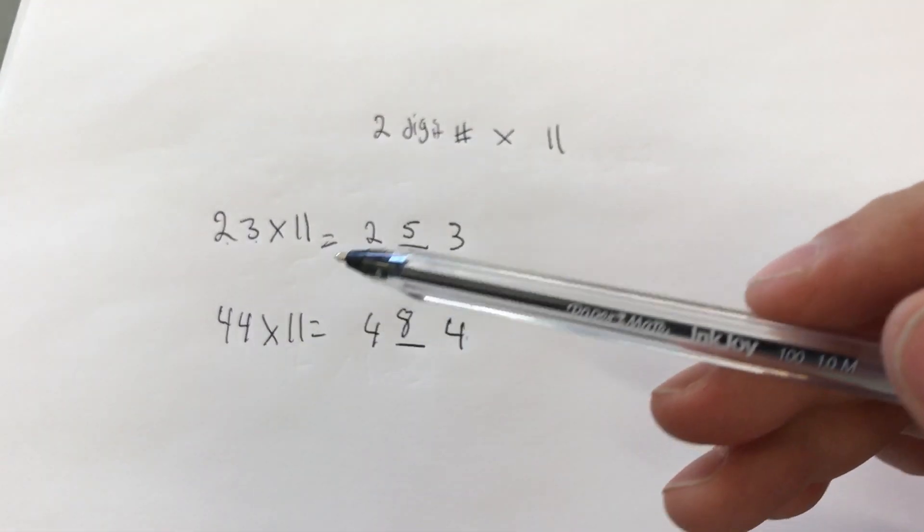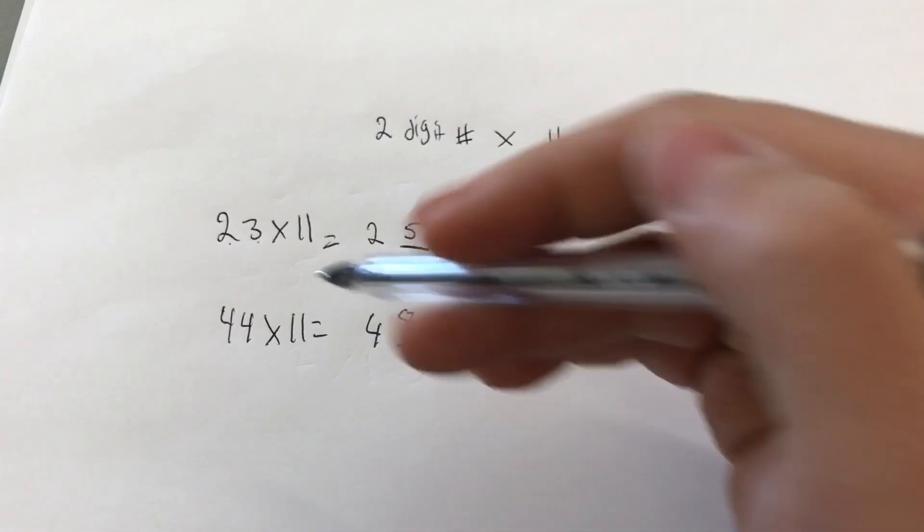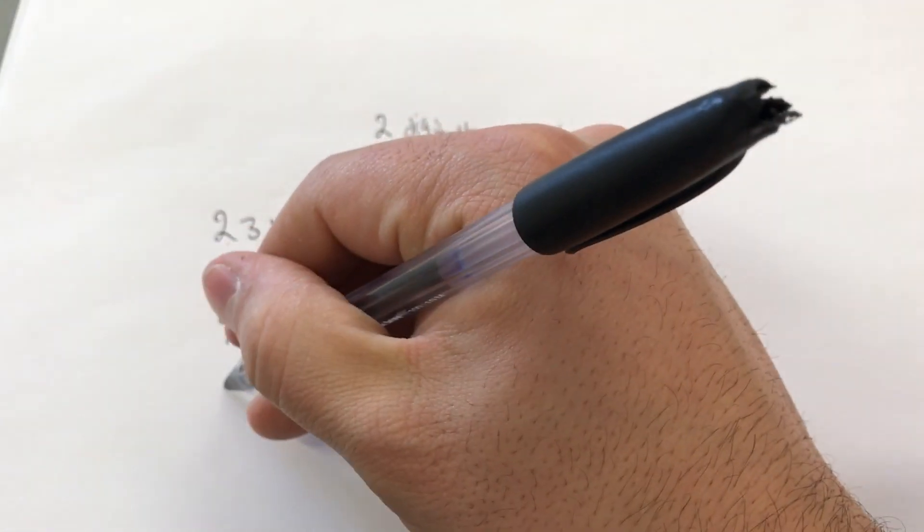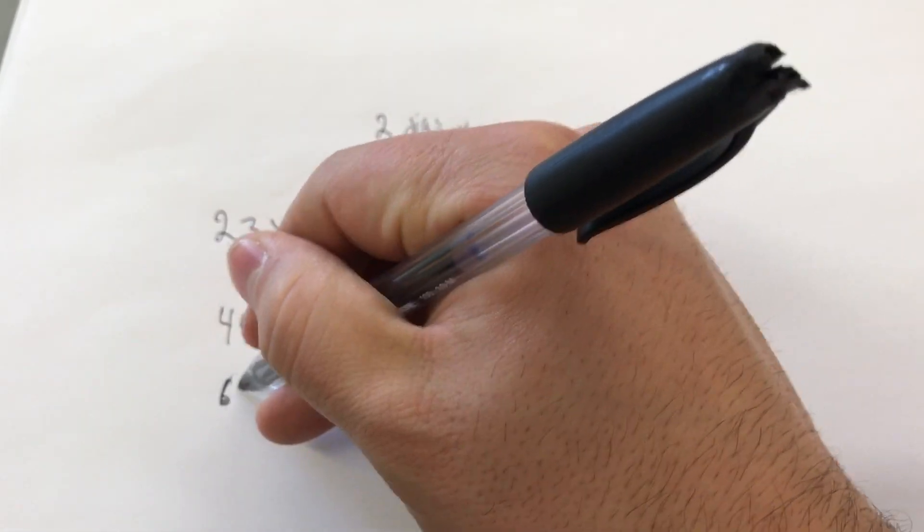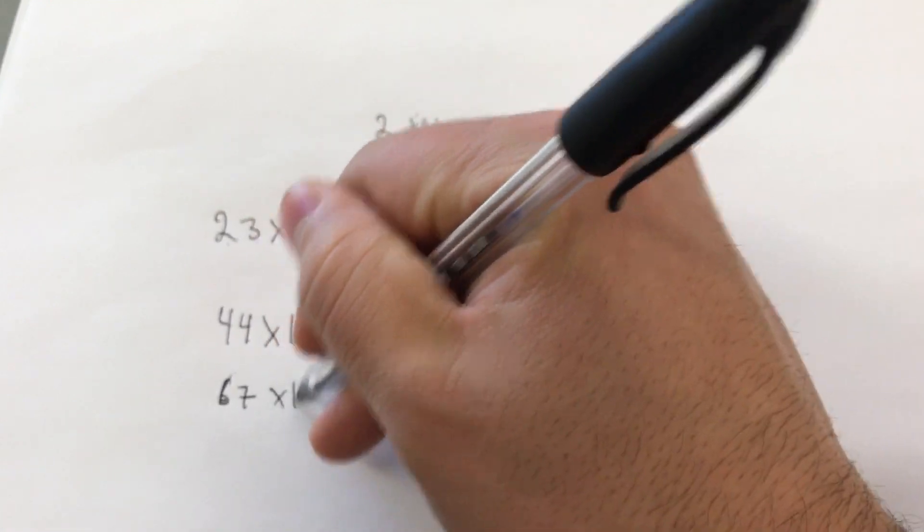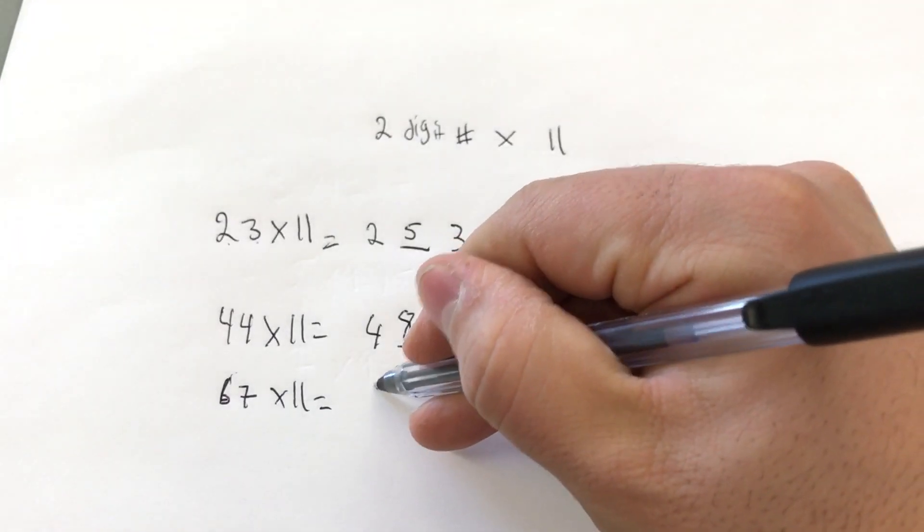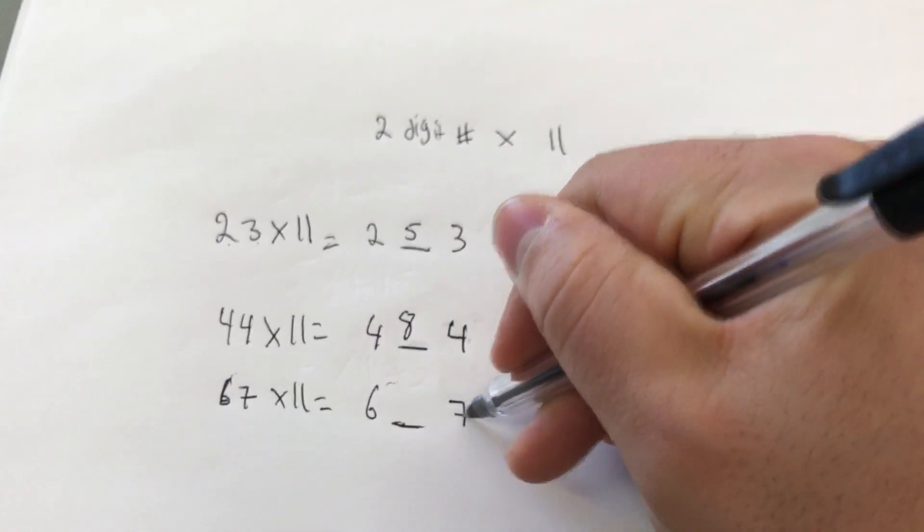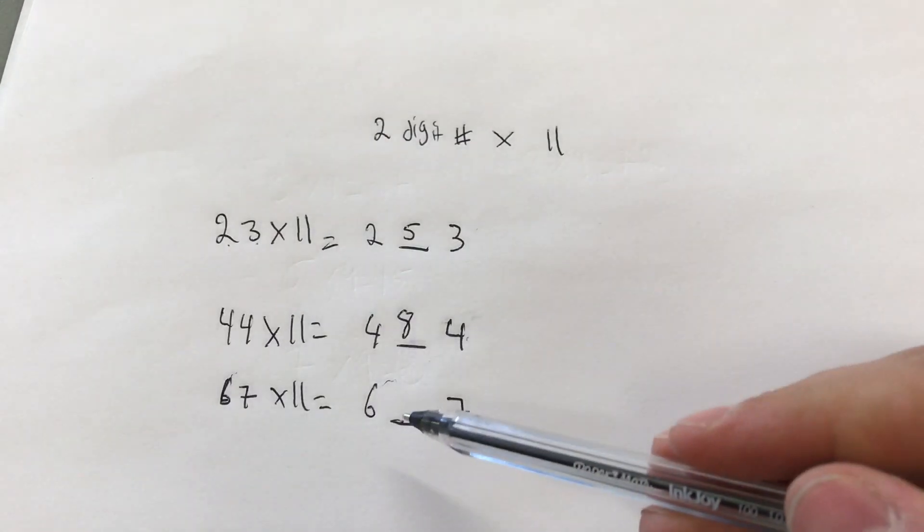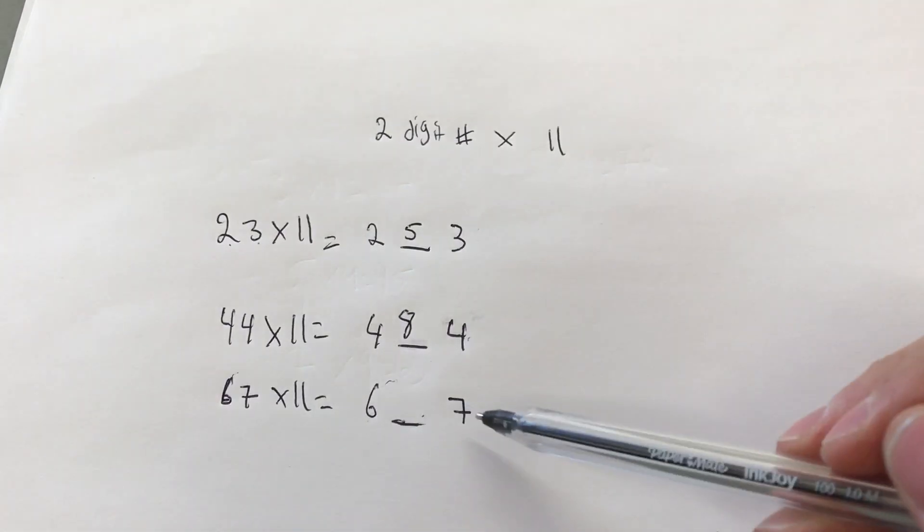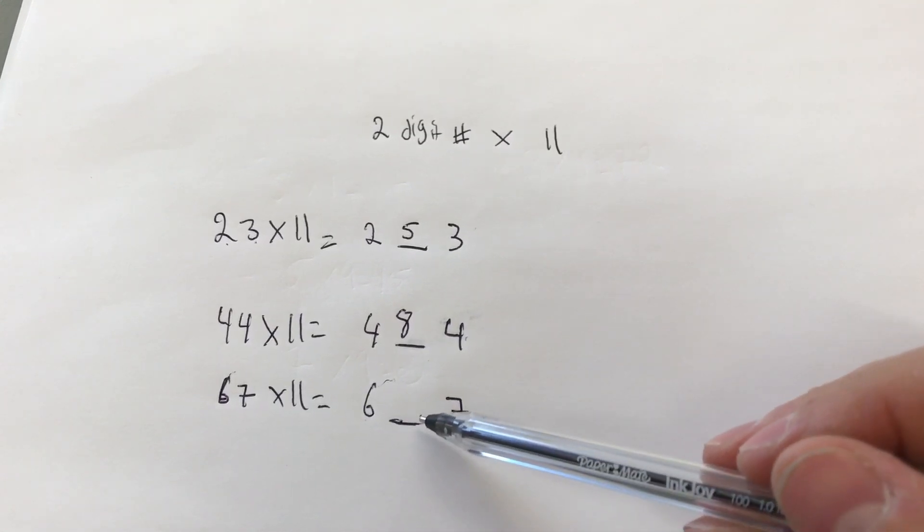Now the next number, it's going to be slightly different and I will show you why. Let's just say we had 67 times 11. So I'm going to put a 6 space 7 once again. And just for the space over here, now we add 6 and 7 together. So 6 plus 7 is 13. But we can't put two digits over here.